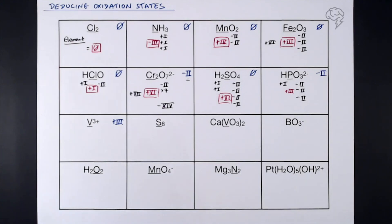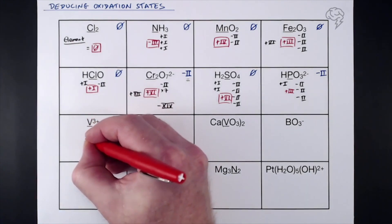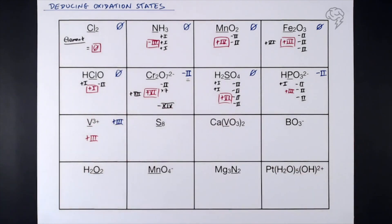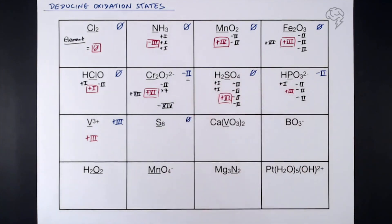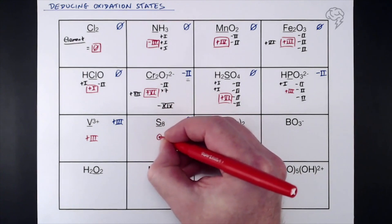Vanadium V³⁺ — overall oxidation state is +3 because it's an ion with a 3+ charge. It's an element, so the oxidation state is the same as that of its ion: +3. Then sulfur as S₈ — overall oxidation state zero. It might be a molecule with eight atoms, but it's still just an element, so the oxidation state of sulfur is zero.